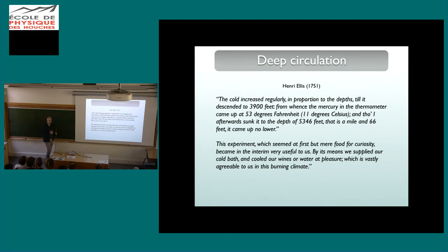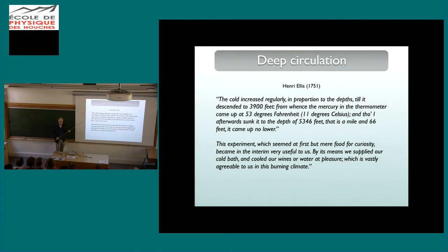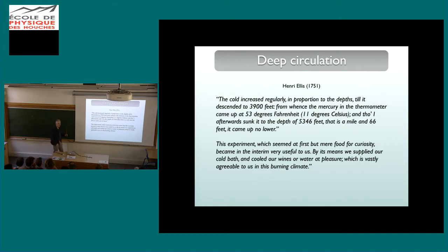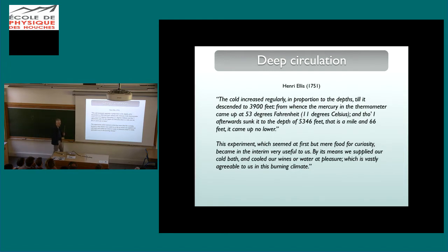Henry Ellis, a captain on a slave trader who crossed the equator often, was an amateur scientist who conducted experiments on his voyages. He measured temperature more systematically using a bucket with flaps that he would lower into the water column and close before pulling back up to measure temperature on deck. He found that temperature kept decreasing down to over a thousand meters, and below that it didn't seem to change much. The temperature he measured was 11°C at depth — a bit higher than today's values because the bucket was lifted through warmer water, slightly overestimating the temperature.